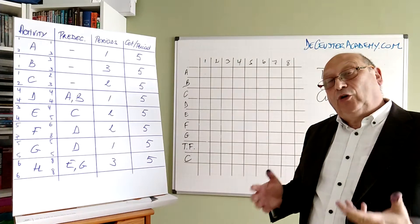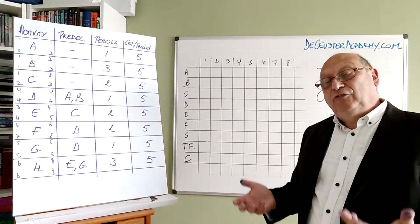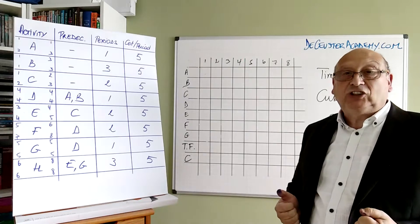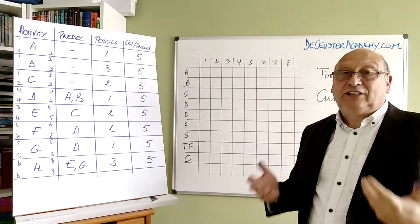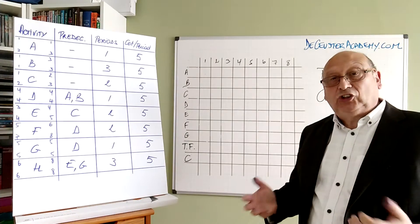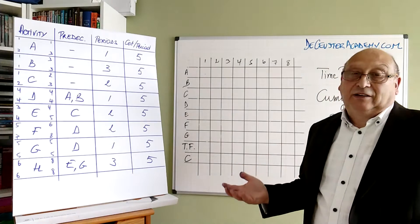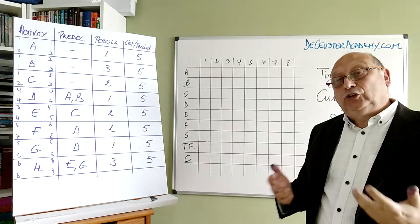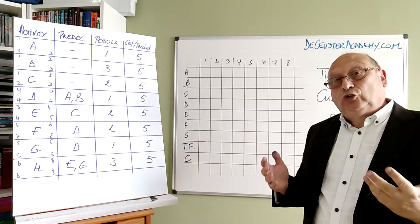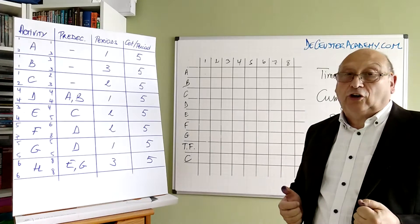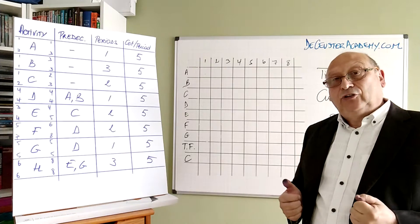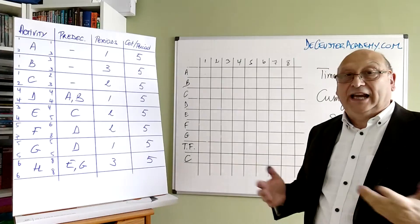Now we are going to put the information from the precedence diagram in the Gantt chart and determine the schedule. We will use that information to determine the cost of the project. We look at the time-phased cost and the cumulative cost or the s-curve.